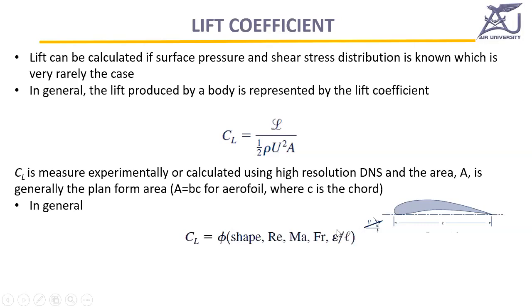For the Mehran, surface roughness doesn't change, and the Froude number is irrelevant. The speed can change, so Reynolds number and Mach number can vary. But Mach number only becomes important when it is above 0.8, and a Mehran cannot reach that speed. Similarly, although Reynolds number changes with speed, we are generally in the Reynolds-number-independent range, so there is no effect on the coefficient of lift.